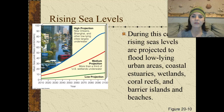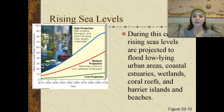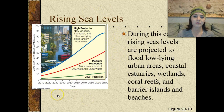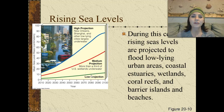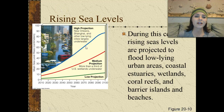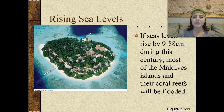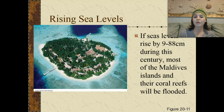We also have rising sea levels. During this century, rising sea levels are projected to flood low-lying urban areas, coastal estuaries, wetlands, coral reefs, and barrier islands and beaches. Scientists have come up with low, medium, and high predictions. Under the low prediction, everybody will pretty much be okay. Under the medium prediction, with a rise of about 50 centimeters, more than a third of the United States' wetlands will be underwater. And if the high projection occurs, then New Orleans, Shanghai, and other low-lying cities will be largely underwater. If the seas rise anywhere between 9 and 88 centimeters during this century, most of the Maldive Islands and their coral reefs will actually be flooded.